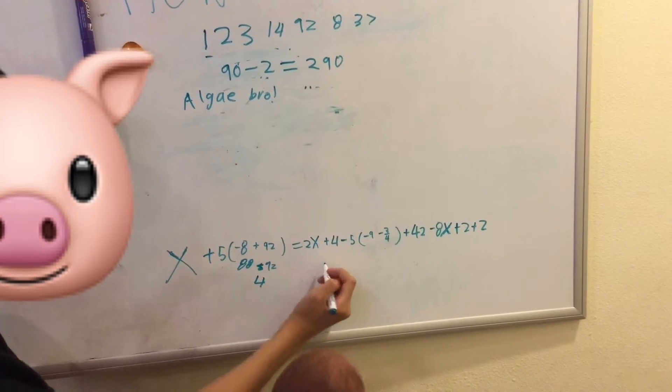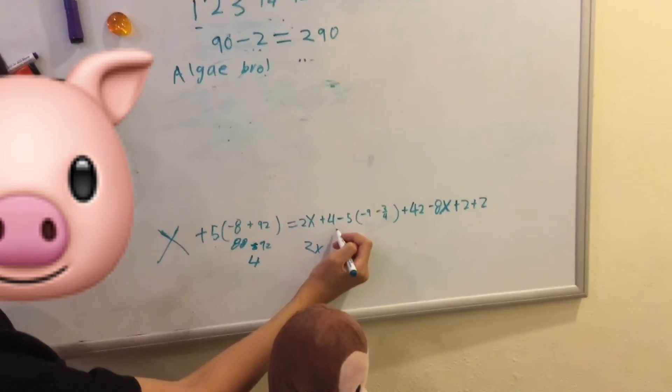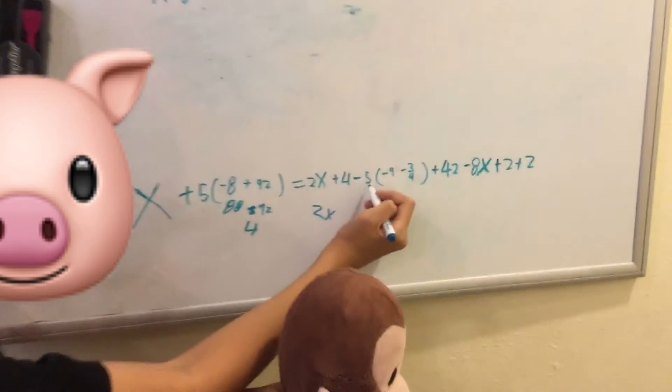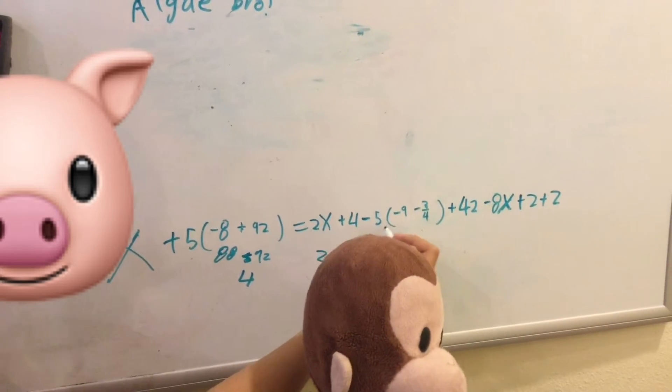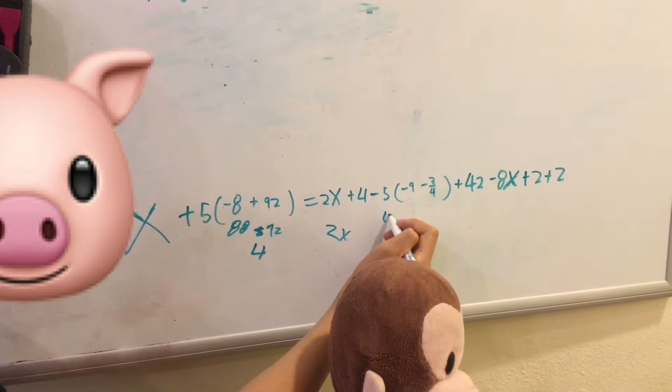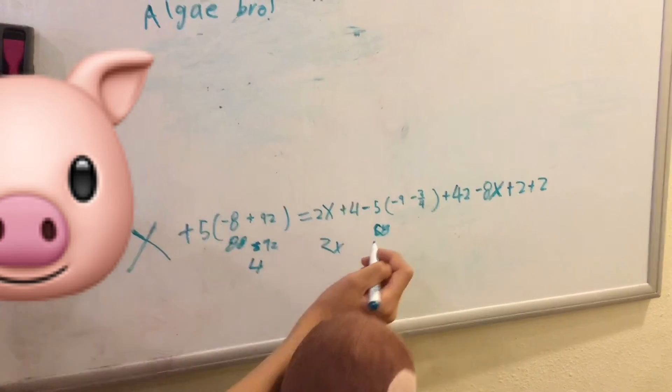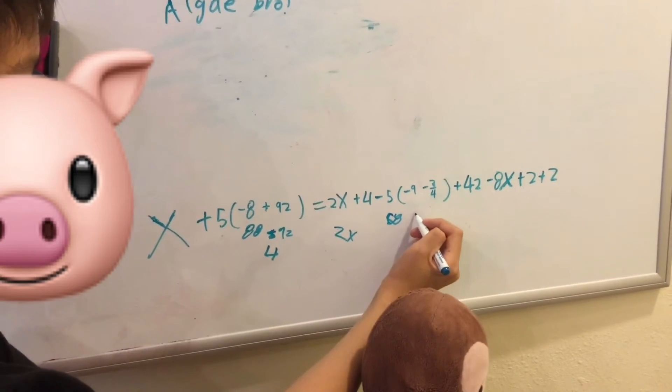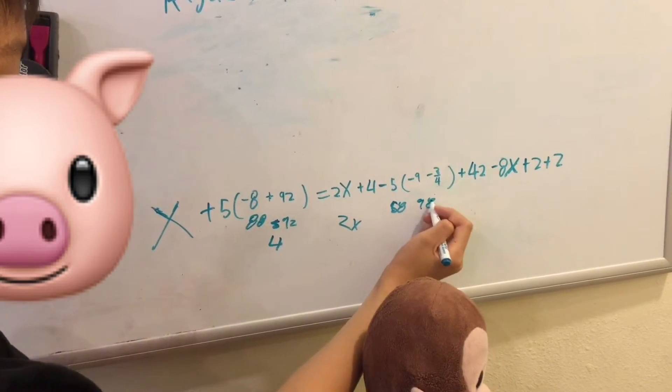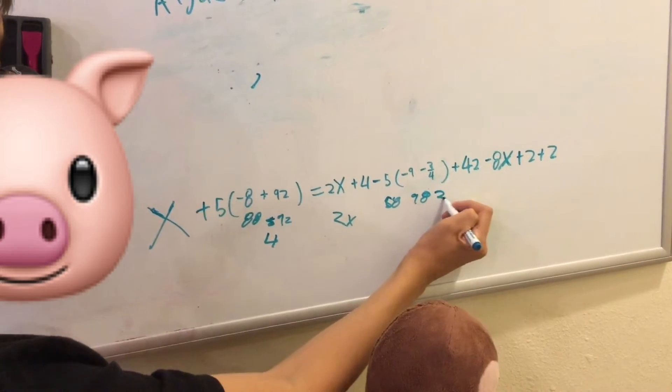Then on this side, we have 2X. Negative negative 5 is... Negative 5 plus 8 is 58 times 98. Oh, we need to do really quick. Let's just say it's 2 because we already did that.